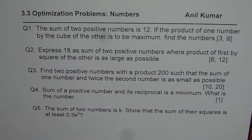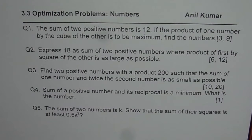Question number 2: express 18 as the sum of 2 positive numbers where the product of the first by the square of the other is as large as possible. The answer is 6 and 12.